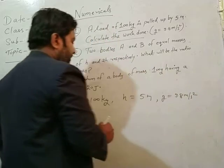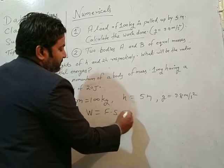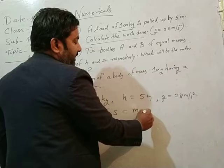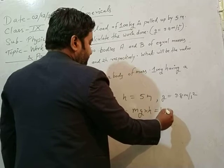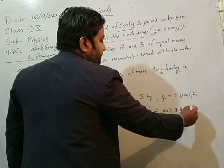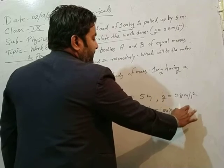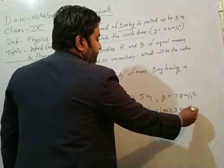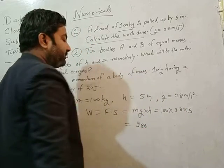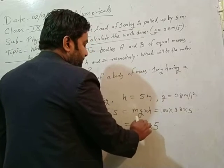So work done, I will remember W equal to force into displacement. And force here is in terms of mg, and displacement is h. Mass that is 100, g is 9.8, and displacement is 5. Let's see, when you multiply 100 into 9.8, then 980, and then multiply with 5 further.